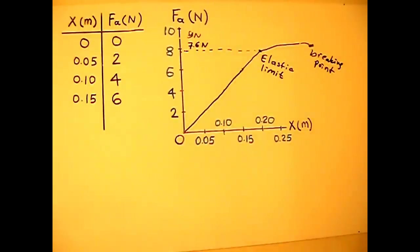If we continue the experiment, we may get a point here. This is the breaking point. At this point, let's say we apply 9 newtons, then the spring is fractured. We are interested in this linear region. We call this Hooke's Law region.